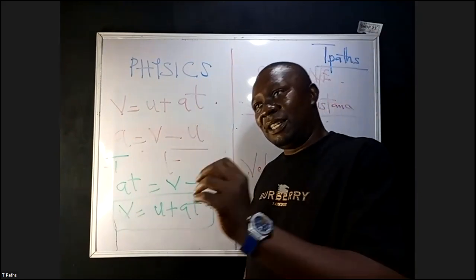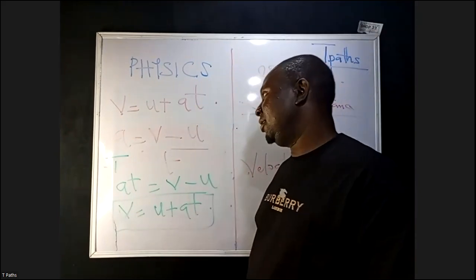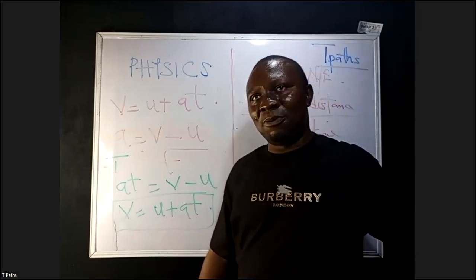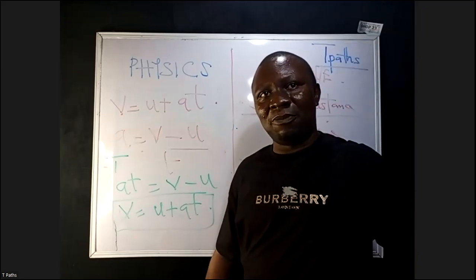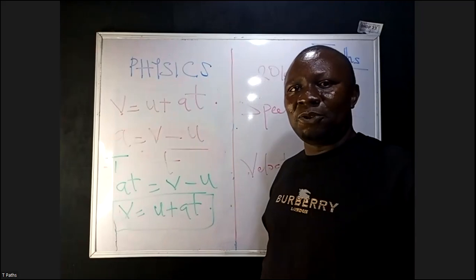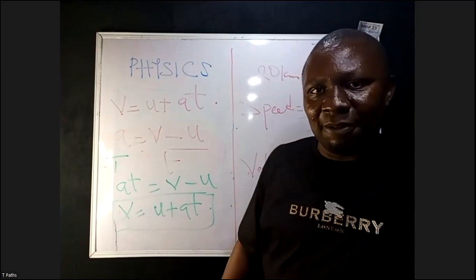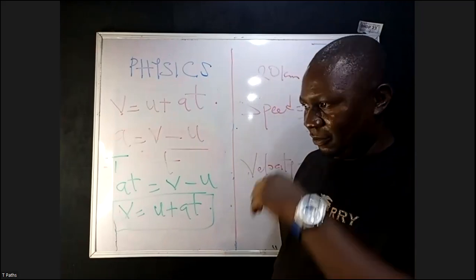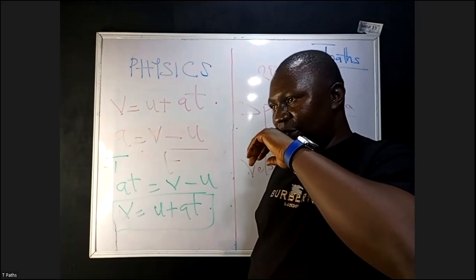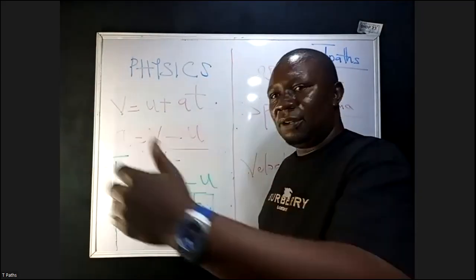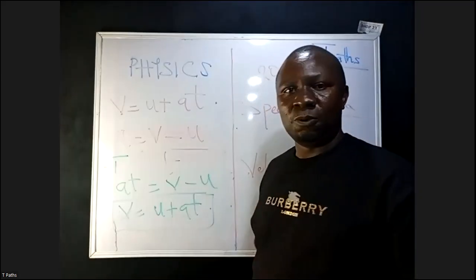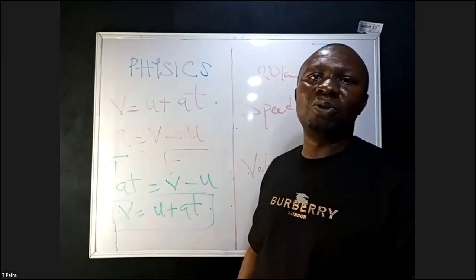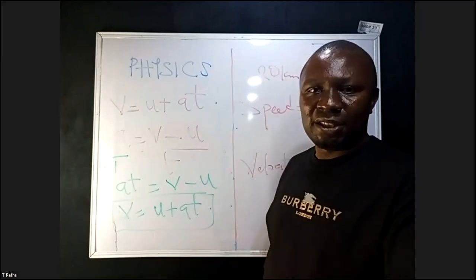Acceleration is changing velocity all over time. For you to know change, you must know from — change must come from initial. You subtract your final from your initial. That's how you know the change. The difference between 10 and 2 is 10 minus 2, which is 8.